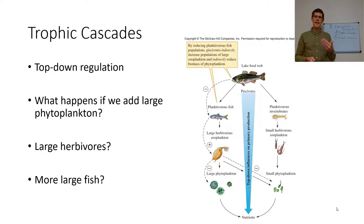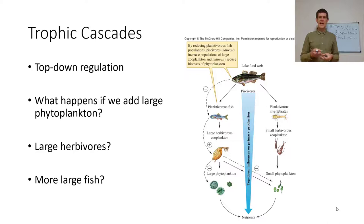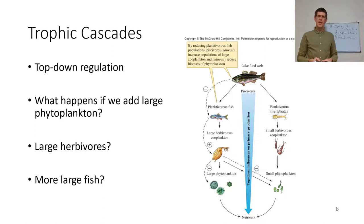There's also top-down regulation. If I have a food web in a lake — phytoplankton eaten by zooplankton eaten by planktivorous fish — and I introduce a bass, that bass has a plus-minus effect on planktivorous fish: plus for the bass, bad for the planktivorous fish. Fewer planktivorous fish means more herbivorous zooplankton; more herbivorous zooplankton means fewer large phytoplankton. So a top-down effect alternates: minus, plus, minus, plus, whereas a bottom-up effect is plus, plus, plus, plus.